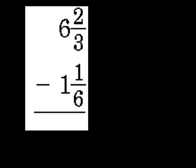So let's take a look at this one. 6 and 2 thirds minus 1 and 1 sixth. So again, kind of split the problem down the middle and think of it one piece at a time. So I'm going to do 2 thirds minus 1 sixth. Again, I need to rewrite my fractions so that I have a common denominator.